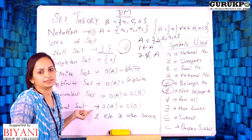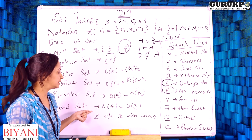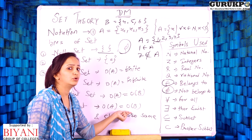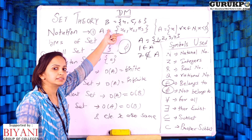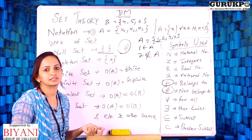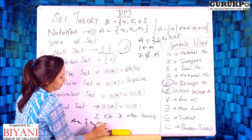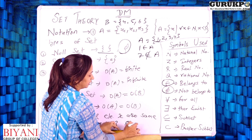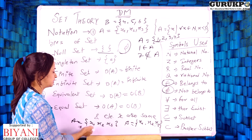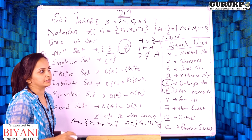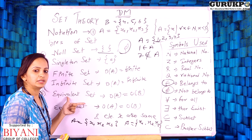The next type is the equal set, and there is a minor difference between equal set and equivalent set. Equal sets are those in which the order of set A equals the order of set B, and the elements are also the same. So {x1, x2, x3} and {x1, x2, x3} are equal sets. The types of sets are: null set, singleton set, finite set, infinite set, equivalent set, and equal set.